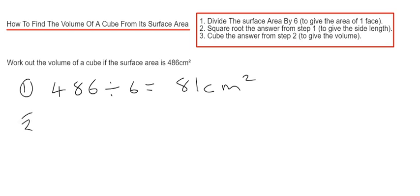So step two is we square root the last answer. So that will give us the side length of our cube. So the square root of 81 is 9 cm.